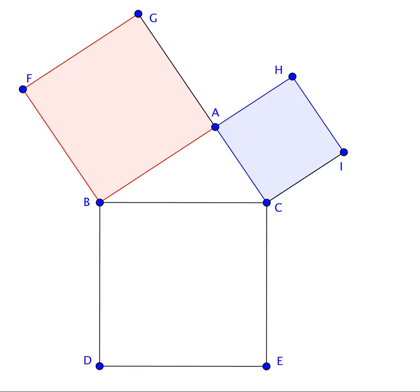The construction of the squares requires the immediately preceding theorems in Euclid and depends upon the parallel postulate. From A, draw a line parallel to BD.